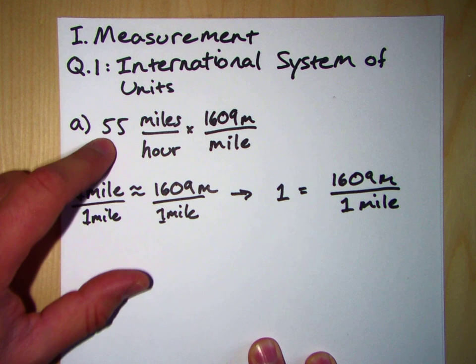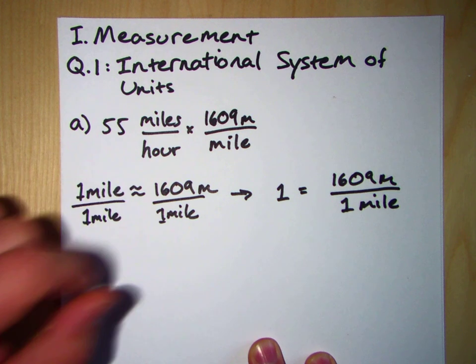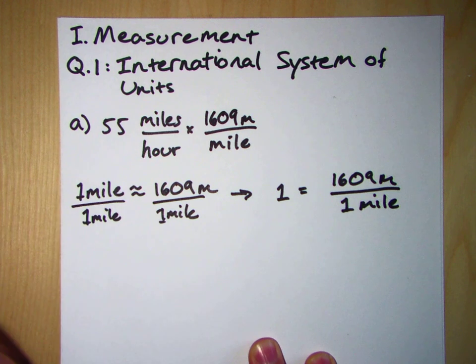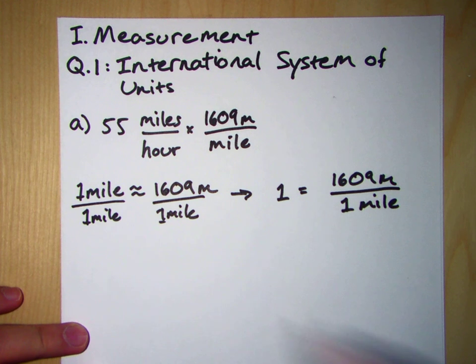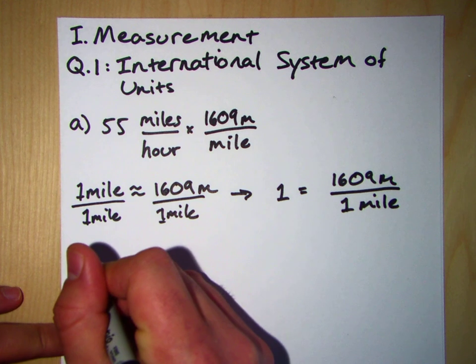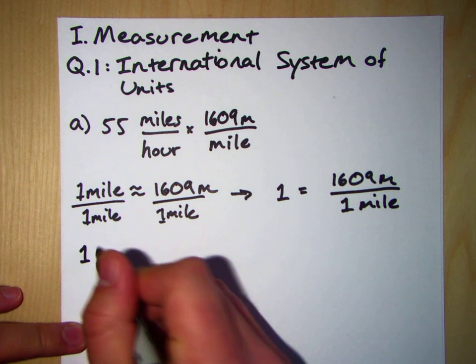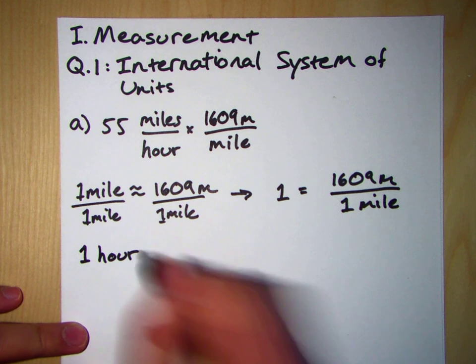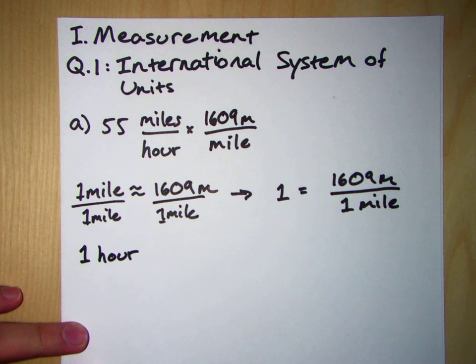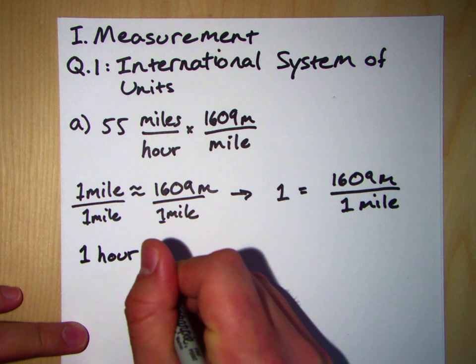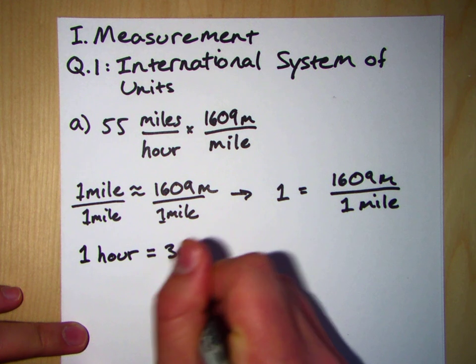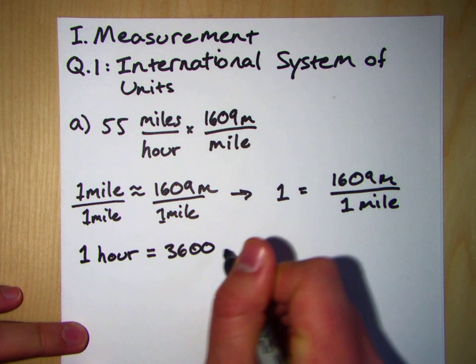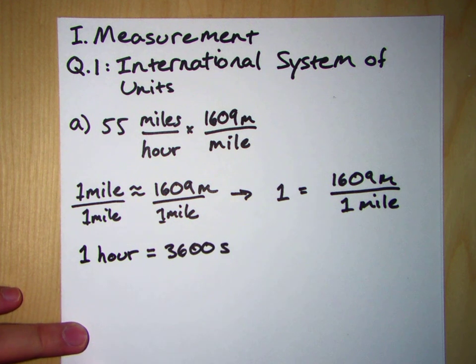We have to deal with time. We're given 55 miles per hour. We want meters per second. So we have to convert hours to seconds. Well, hours and seconds are related as such. One hour, we know there are 60 minutes in an hour, and there are 60 seconds in a minute. So altogether, 60 times 60 means that there are 3600 seconds in an hour.